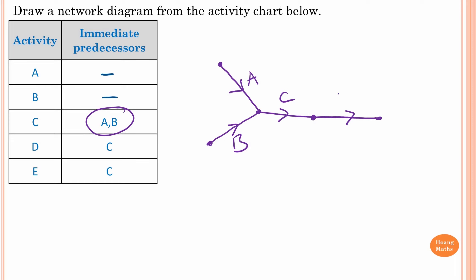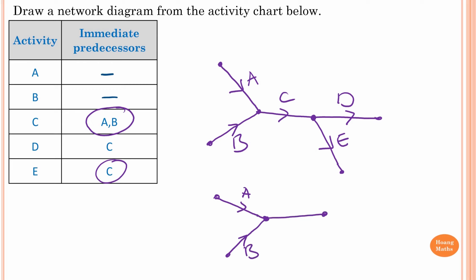For activity E, C is an immediate predecessor, so we start from this vertex and branch it out. Let me redraw the diagram to look a bit better — this is A, this is B, this is C, this is D, and this is E. It doesn't really matter as long as you get the idea and the shapes are similar.